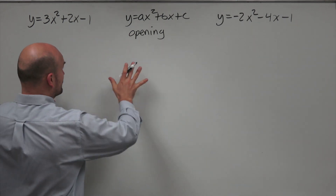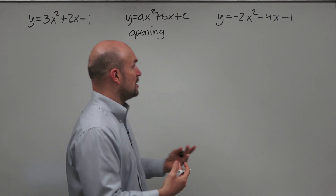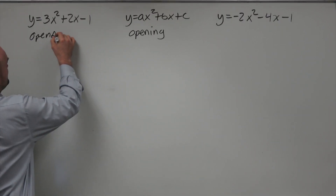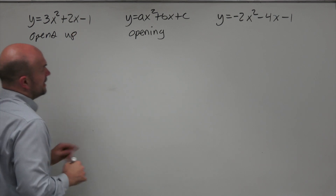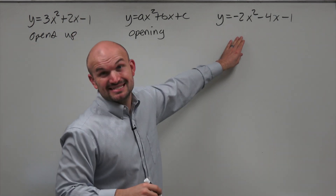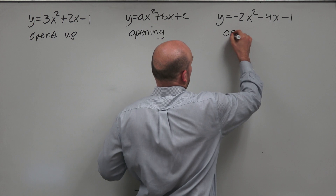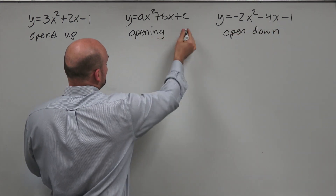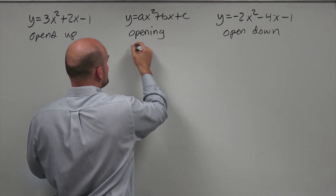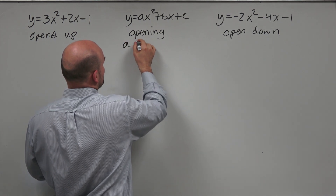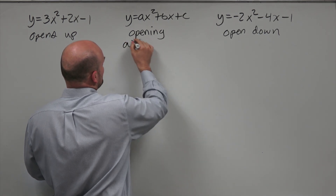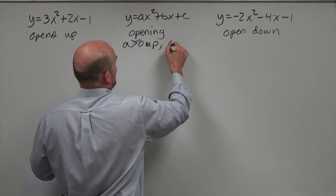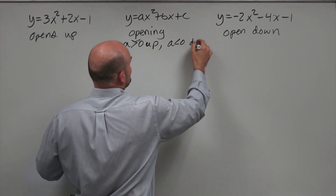We're not going to graph these — we're just going to identify the parts. In the first example, the graph is going to open up. In the second, A is negative, so this graph is going to open down. To summarize: if A is greater than 0, it opens up; if A is less than 0, it opens down.